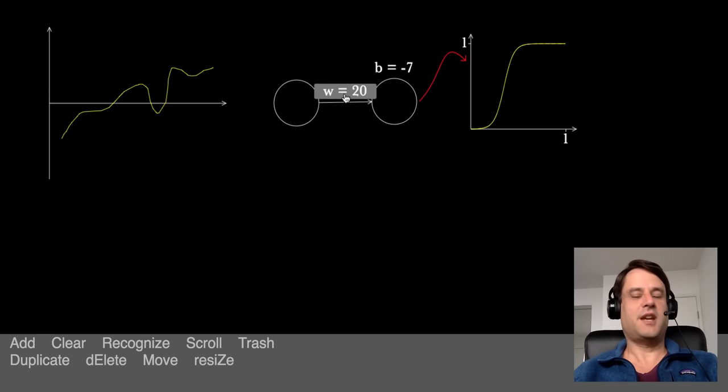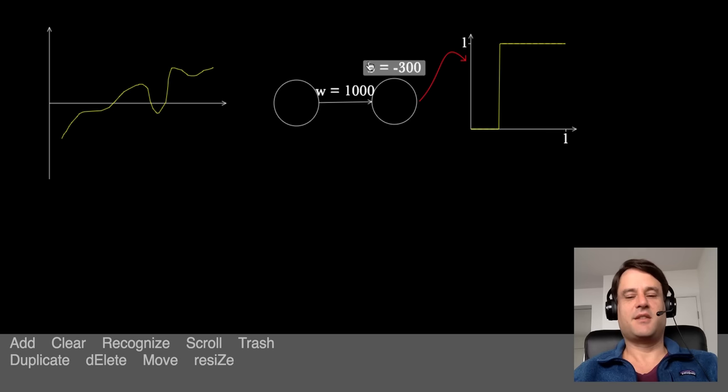Now, it's difficult a priori to see how to use this to build up an arbitrary function. The basic problem is caused by the fact that this is really a very complicated kind of object. But we can simplify it a great deal by increasing the weight a lot. What that does is it causes this graph to be very compressed, and when it's compressed, it actually becomes a lot easier to think about.